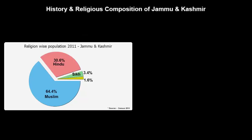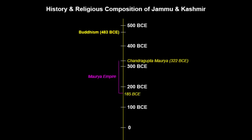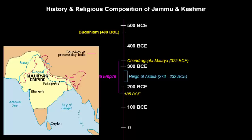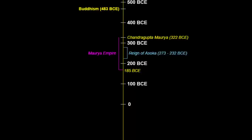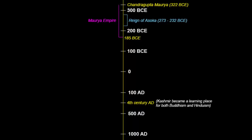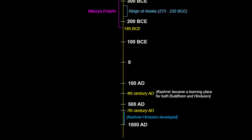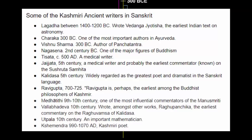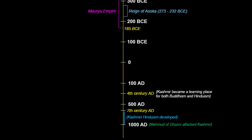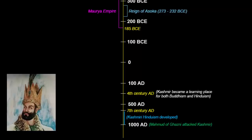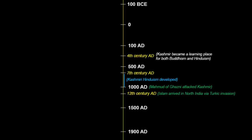Today, Kashmir region is a Muslim majority region, but initially it wasn't like that. Looking at the history of Kashmir, we go back to around 300 BCE. Maurya Emperor Ashoka had a strong connection with Kashmir — during his reign, Kashmir became part of the Maurya Empire, Buddhism was introduced, and he even founded the city of Srinagar. By the 4th century AD, Kashmir became a learning place for both Buddhism and Hinduism. Kashmiri Buddhist missionaries helped spread Buddhism to Tibet and China. After the 7th century, significant developments took place in Kashmiri Hinduism. It was during the 11th century that Mahmud of Ghazni made two attempts to conquer Kashmir, but did not succeed. Islam started arriving in North India in the 12th century via Turkic invasions.